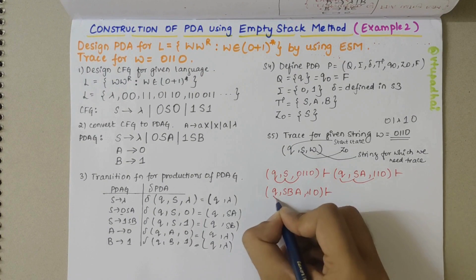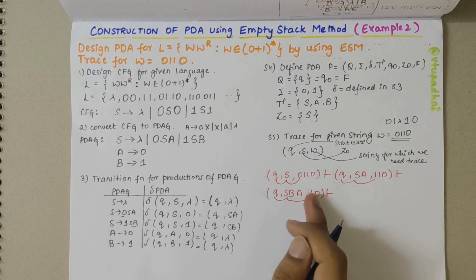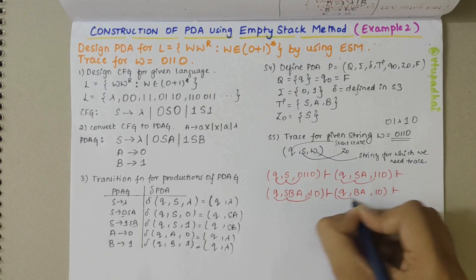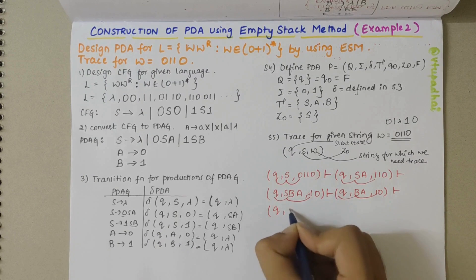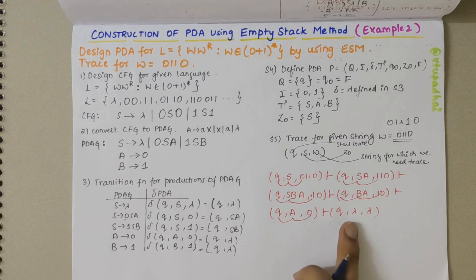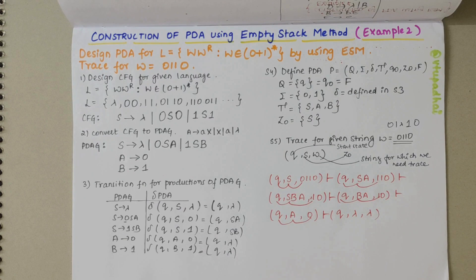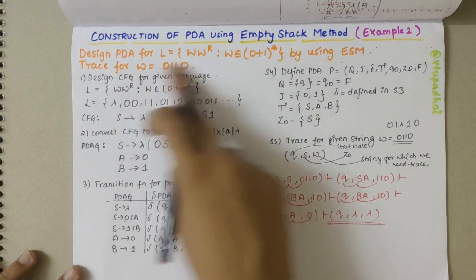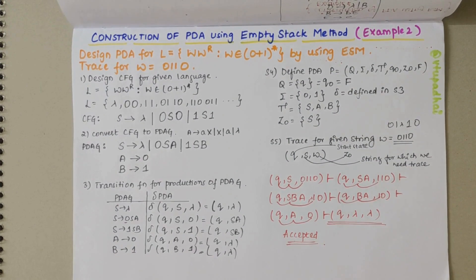Finally, delta(Q, 0, A) = (Q, lambda): A is removed and 0 is consumed. I am left with configuration (Q, lambda, lambda) — both the stack and input string are empty. For the empty stack method, when we reach (Q, lambda, lambda), the given string is accepted. So the string 0110 is accepted.